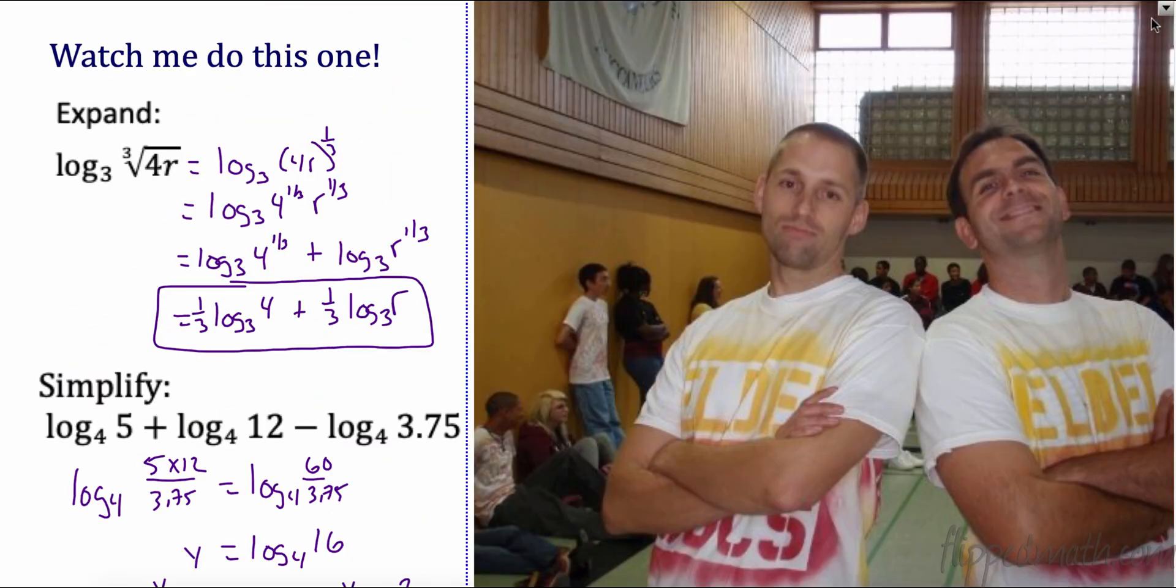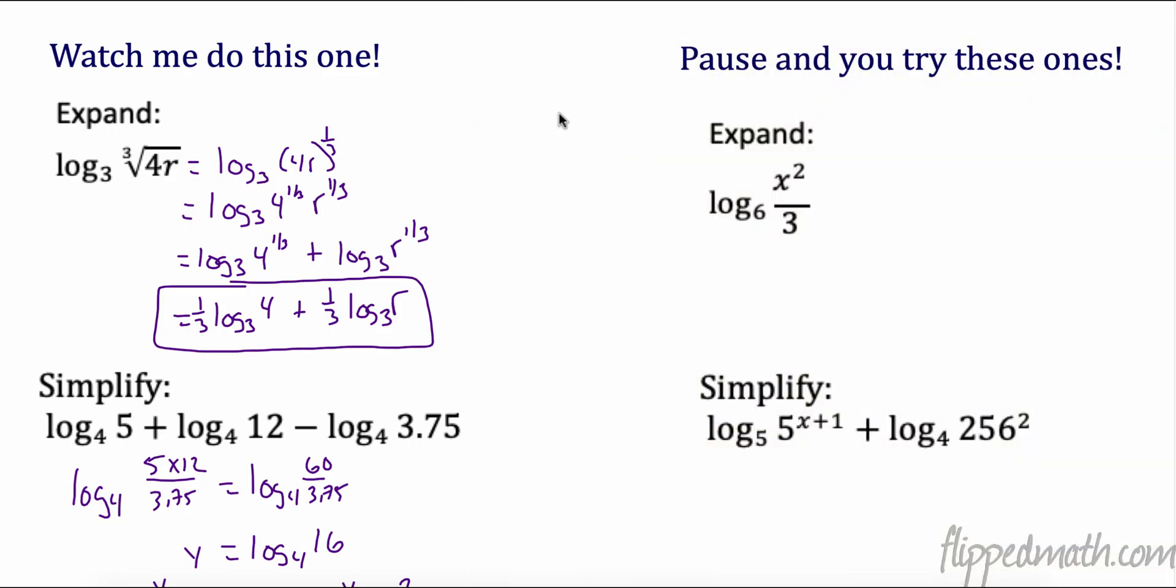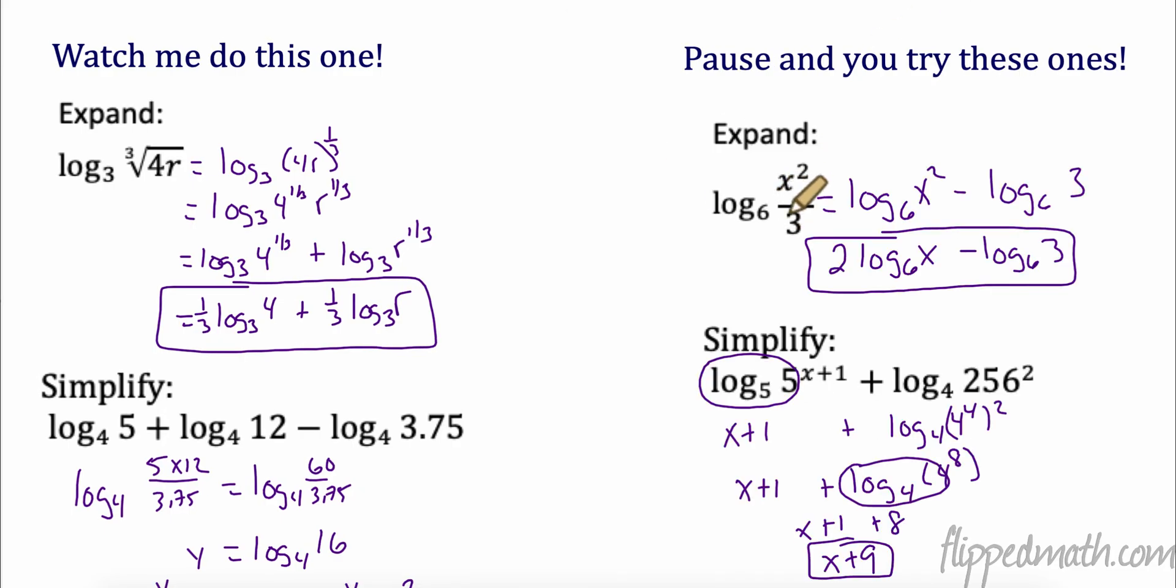So I would like you to end today here by trying your very own. Do your best on these. Pause the video. Legitimately try them on your own. All right, here we go. So I know this is division, so we use our quotient property, which means I can separate them by subtraction. So I have log base 6 of x squared minus log base 6 of 3. I use my power rule, brought it to the front. Down here I notice the first thing is that these 5 and 5 are the same. That means our answer is the x plus 1 - it's our exponent. Now over here this is kind of tricky. I recognize that 4 to the 4th is 256. And then the 4th power to the 2nd power, I multiply, that's 8. Now I had log base 4 of 4 to the 8th. This cancels and my exponent is 8. Add them up and I get x plus 9.